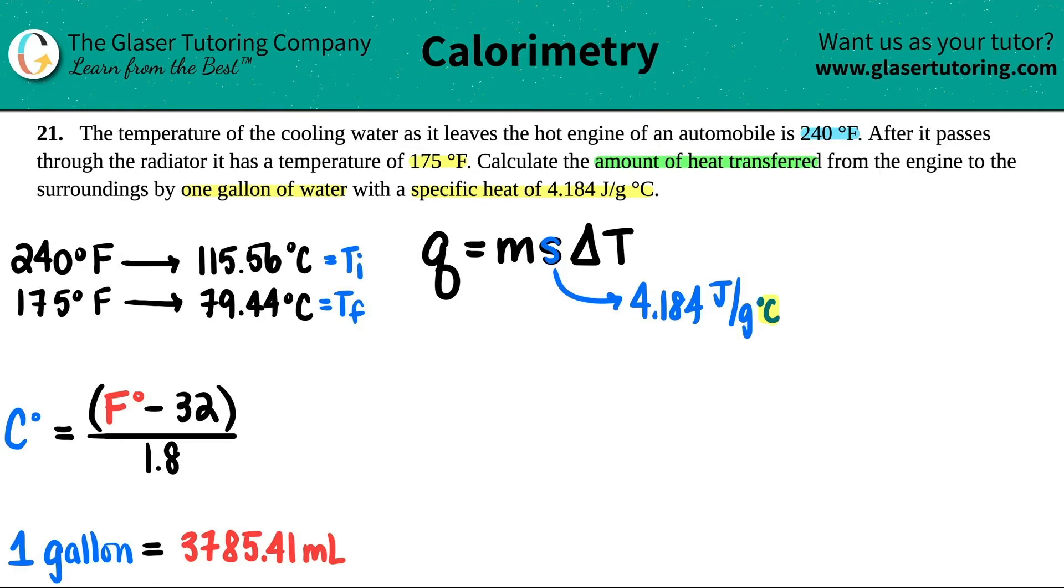Now I can figure out what delta T is. Delta T, remember it's final temp minus initial temp. So final, I'm going to take 79.44 and subtract it from the 115.56. And then I'll just put that over here, delta T equals whatever that number is.